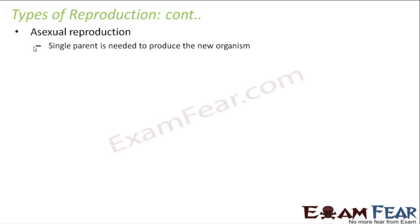What is asexual reproduction? A single parent is needed to produce a new organism. That means you do not need two parents. Like in human beings, we need a father as well as a mother to produce a new baby. But in asexual reproduction we just need one parent — that single organism is able to give birth to a new organism. That is called asexual reproduction.